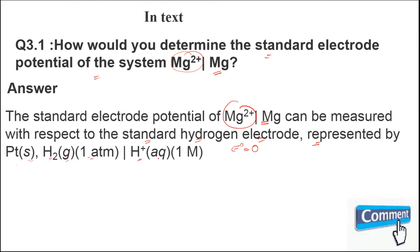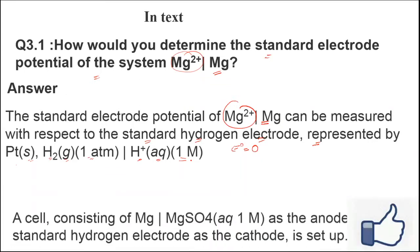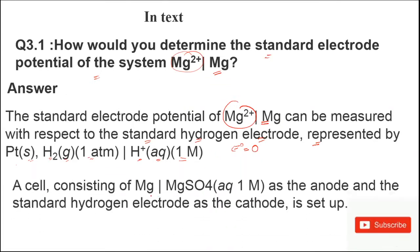To find out the standard electrode potential of Mg²⁺|Mg, we will set up a cell. In this cell, magnesium|magnesium sulfate 1 M solution acts as an anode, whereas the standard hydrogen electrode acts as a cathode. The magnesium rod acts as an anode and the standard hydrogen electrode acts as a cathode.